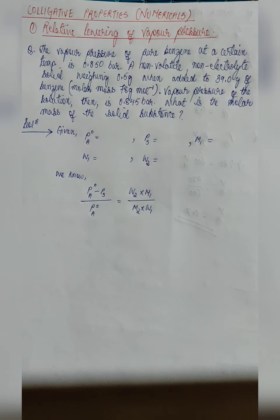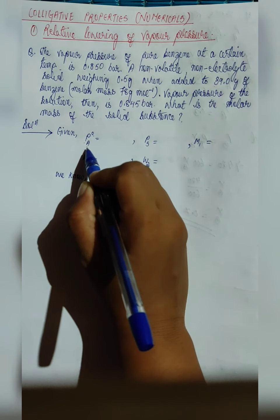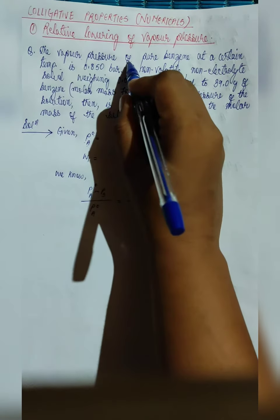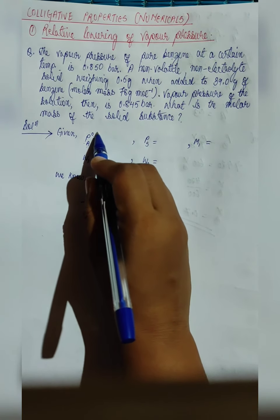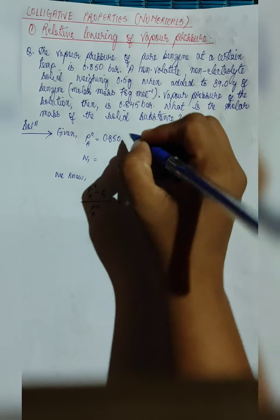We are asked to find out the molar mass of the solid substance. The vapor pressure of benzene is mentioned and also the molar mass is mentioned. We will write down whatever is mentioned in the question. P_A naught — remember that whenever you see naught, it is indicating a pure component. So the vapor pressure of pure benzene is denoted as P_A naught, given as 0.850 bar.